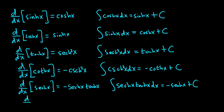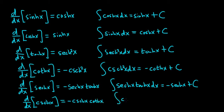Last but not least, if you take the derivative with respect to x of the hyperbolic cosecant of x — if it was just cosecant, you would get negative cosecant cotangent, so it's very similar here, except you have the hyperbolic ones: negative hyperbolic cosecant times hyperbolic cotangent. So when you integrate hyperbolic cosecant times hyperbolic cotangent with respect to x, you get negative hyperbolic cosecant x plus an arbitrary constant.